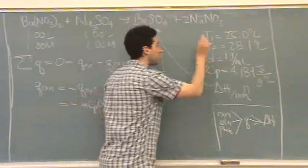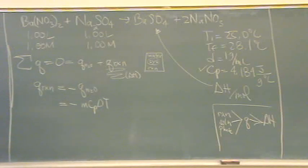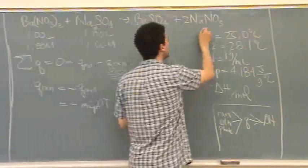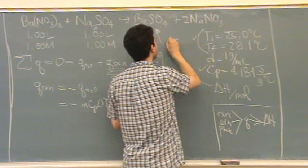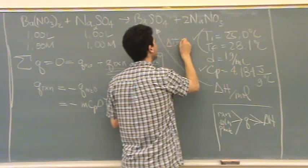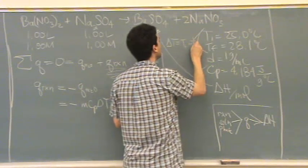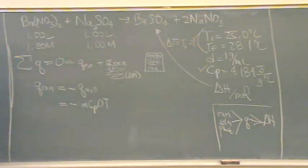Now we've got to find these terms. So let me do these terms each separately. Cp, check. Temperature change, check. That's delta T, is T final, minus T initial. That's right?